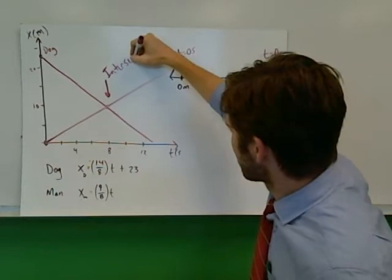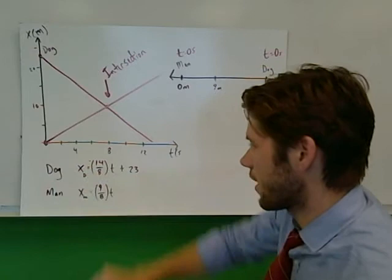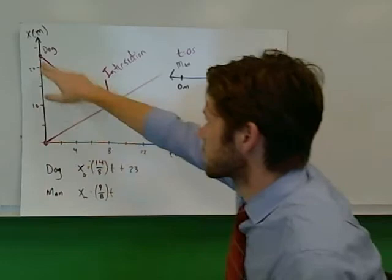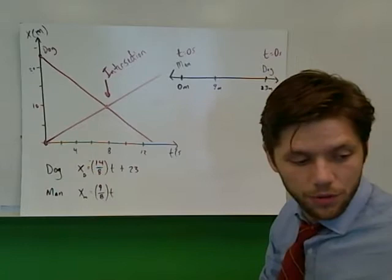We get these as the two lines that represent the motion, and that's the point of intersection. From those we can get the two equations of motion. This is going to allow us to get a much more specific answer. I have x sub d, the position of the dog, equals negative 14 divided by 8 times t plus 23. It's negative because this line has a negative slope.